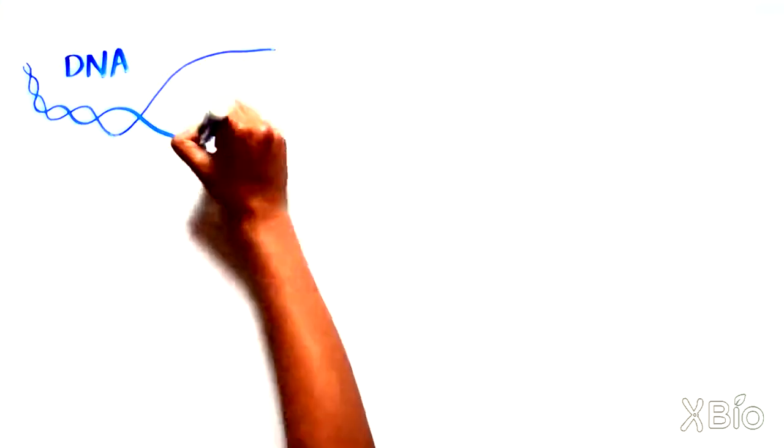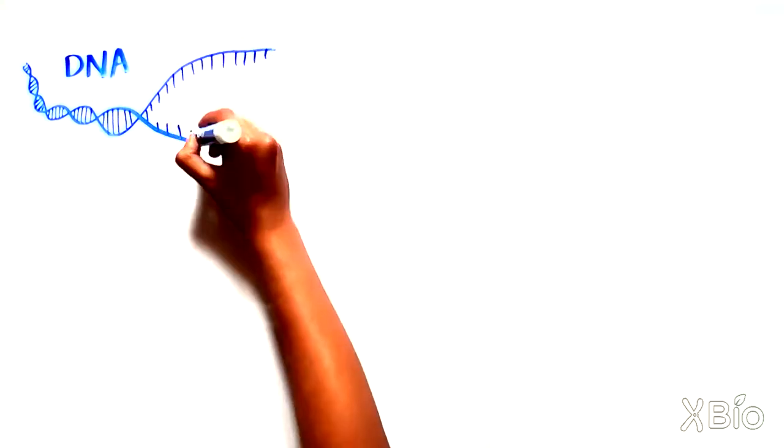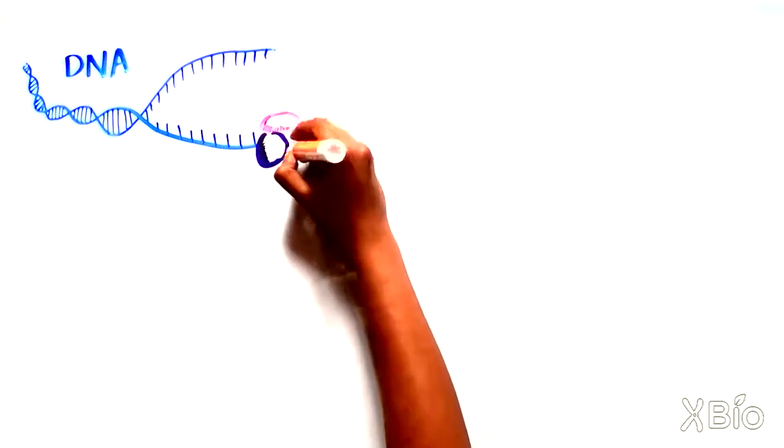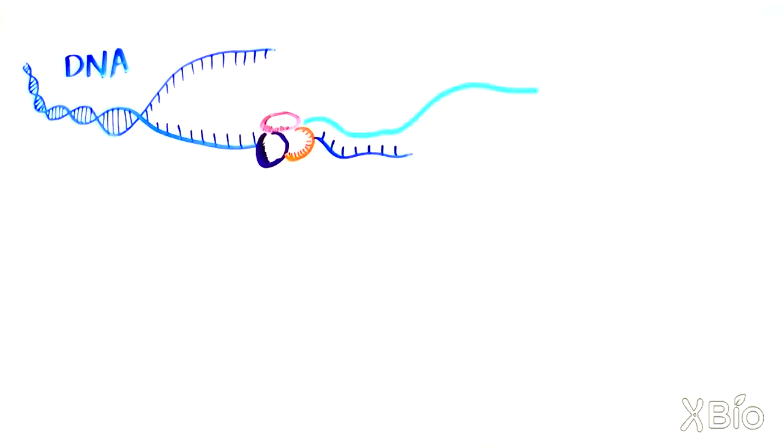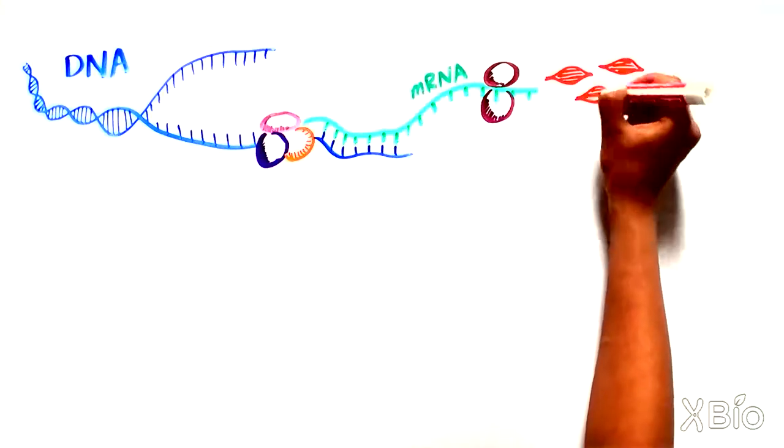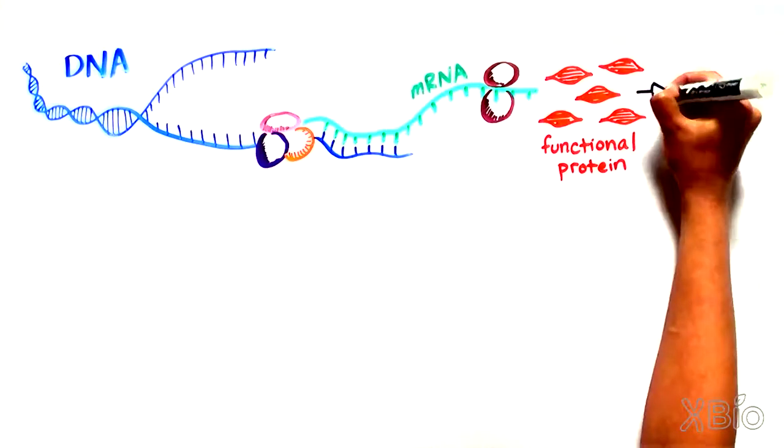First, DNA, which is made up of two complementary strands, is unzipped and a complex of proteins turns one of these strands into a single strand of RNA, known as messenger RNA or mRNA. This mRNA is then read by a different complex of proteins, resulting in the assembly of a functional protein.